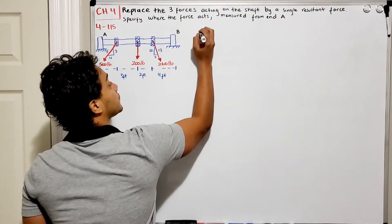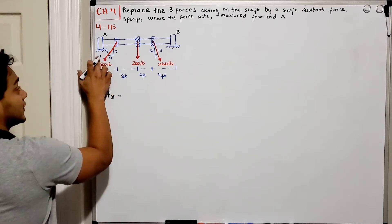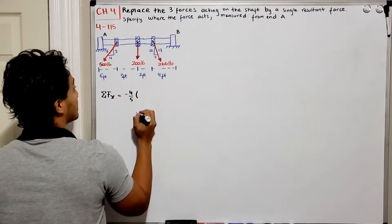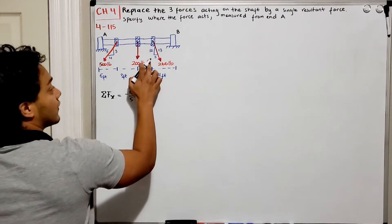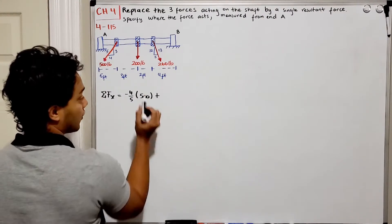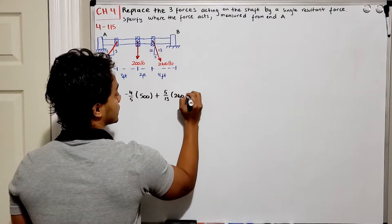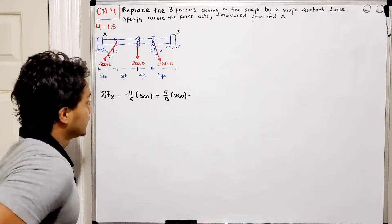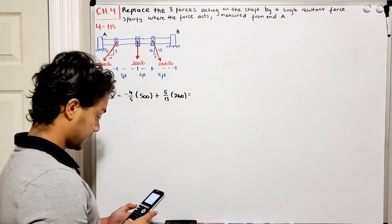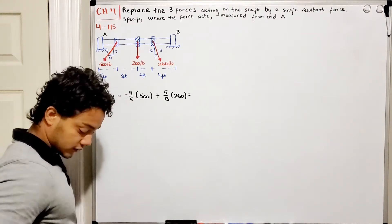For the sum of forces in the x direction, I have negative four-fifths of 500 pounds, plus five-thirteenths of 260 pounds. Calculating: negative (4/5)(500) + (5/13)(260) equals negative 300 pounds in the x direction.